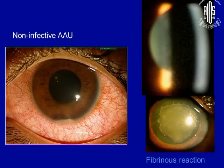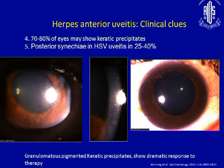Compared to the very classic corneal uveitis that we see with seronegative spondyloarthropathies, where it is also acute onset, but what you see here is a lot of flare, a lot of cells, a fibrin deposit which might present as a hypopyon, but you do not really have precipitates on the back of the cornea and the pressure would be a little low. This is how we can tell the difference between a non-infectious and an infectious setting.